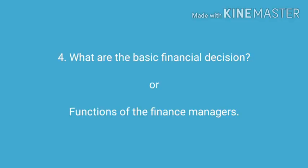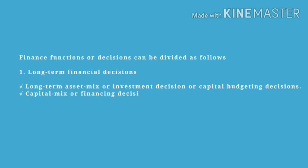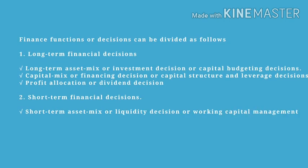The basic financial decisions or functions of the financial manager can be divided into two parts: one is long-term financial decisions and second is short-term financial decisions. In long-term financial decisions there are three decisions: one is long-term asset mix, also called capital budgeting decision; second is capital mix, also called capital structure decision; and third is profit allocation, also called dividend decision. In the investment decision, the finance manager analyzes every investment decision before it is made and accepts only such decisions that would be compatible with the goal of value maximization.